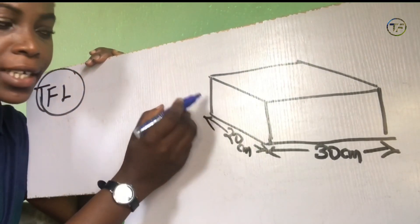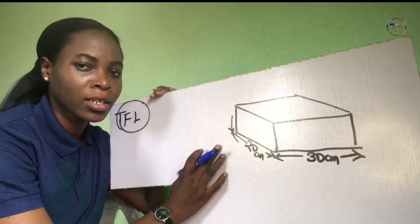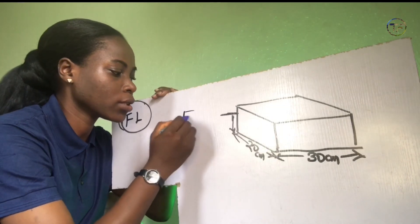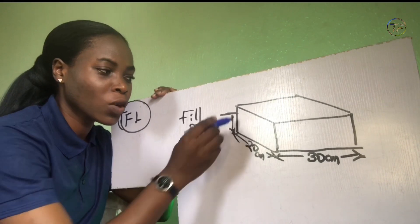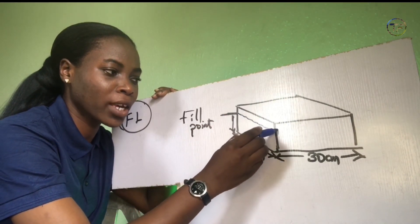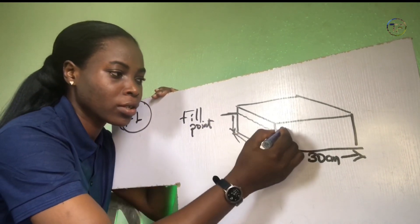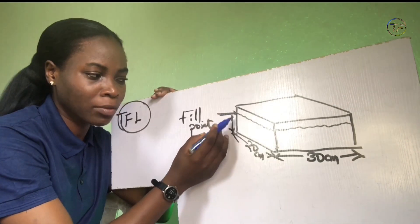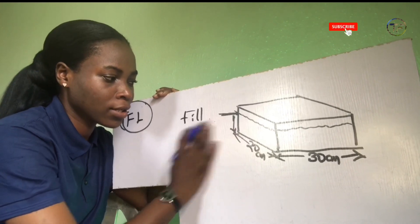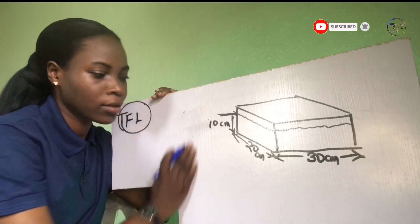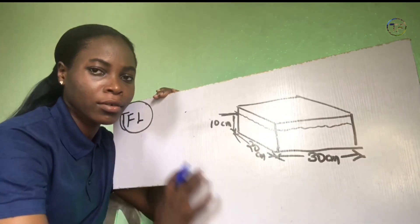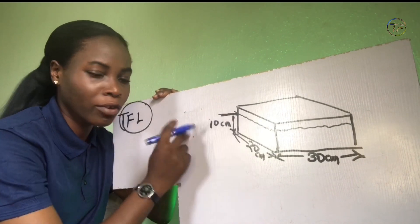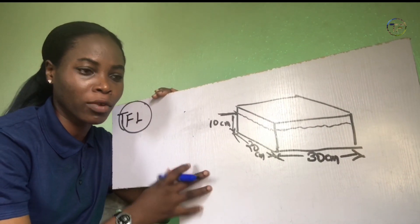For the height, you can't calculate the total height. What you are supposed to calculate is from the fuel point. When I say fuel point, I mean where the water usually gets to when you fill it up, or where your overflow pipe stops. So let's say the measurement from the fuel point to the base is around 10 centimeters. So we have: length 30 cm, width 20 cm, and height from the fuel point 10 cm.